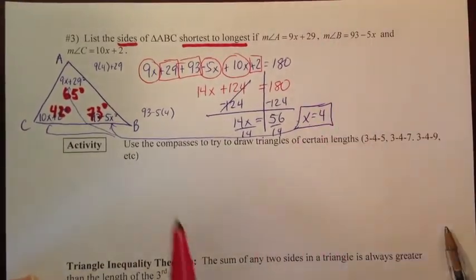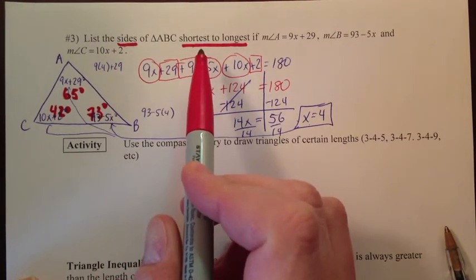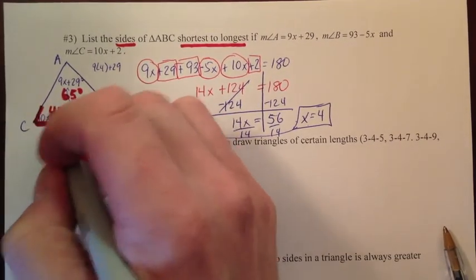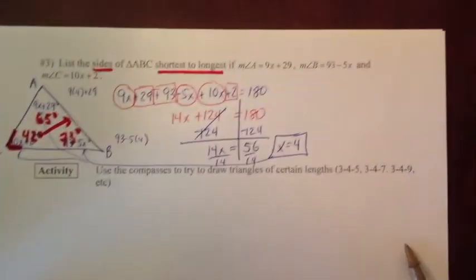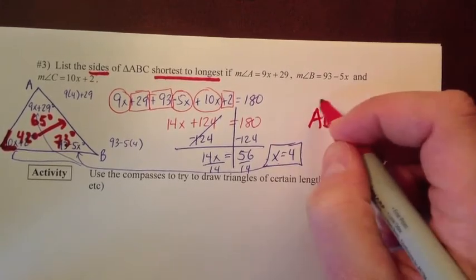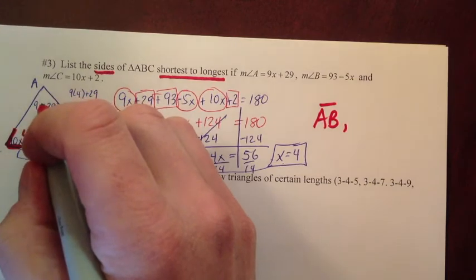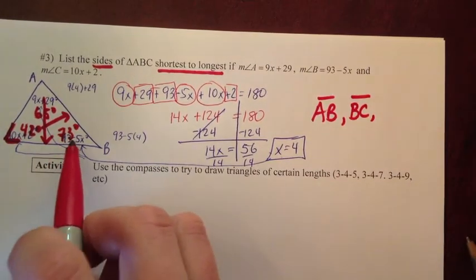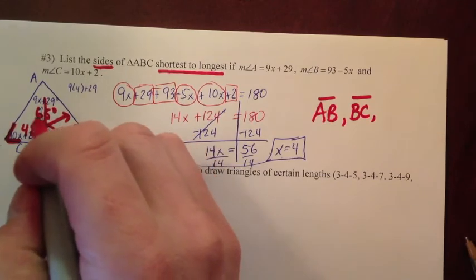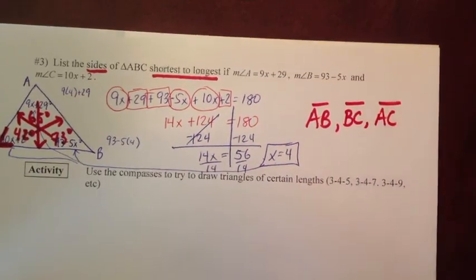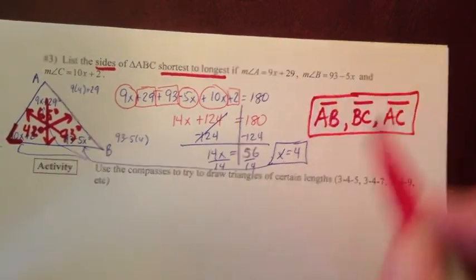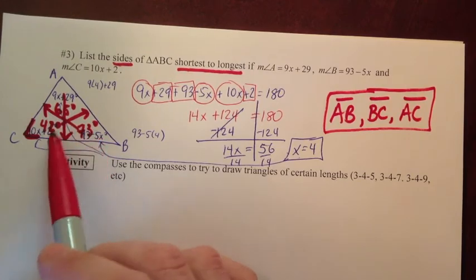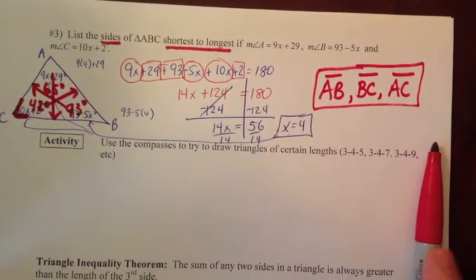Last thing — answer the question: list the sides shortest to longest. The shortest side is opposite the smallest angle, which was 42 degrees — that's angle C — so the opposite side is AB. The middle angle was A at 65 degrees, so the middle side is BC. The biggest angle is B at 73 degrees, so the biggest side is AC. My picture didn't end up accurate but it doesn't matter — I just draw a generic triangle to visualize. And that's the end of part two.